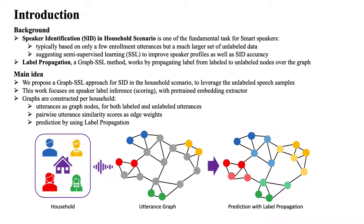The main idea of this work is proposing a graph-based sampling approach for speaker identification in household scenarios to leverage the unlabeled speech samples. In contrast to most previous works that focus on speaker embeddings, this work focuses on speaker label inference, or the so-called scoring process.